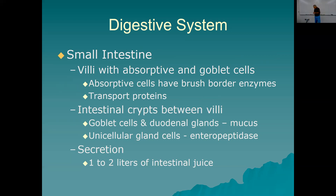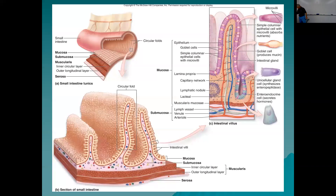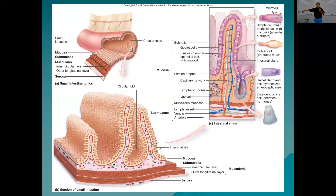The small intestine secretes one to two liters of intestinal juice — a mucusy, watery fluid. The lining has plicae circulares (circular folds) with villi on them, and those villi have microvilli, creating a huge surface area. In cross section you can see the blood capillaries and the lacteal (the lymph capillary) inside each villus, located in the submucosa.